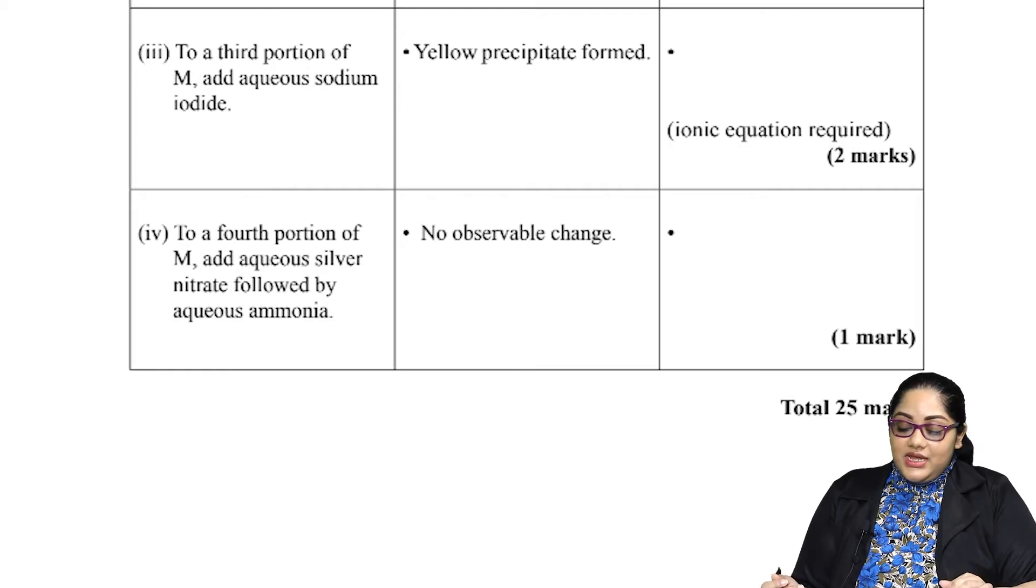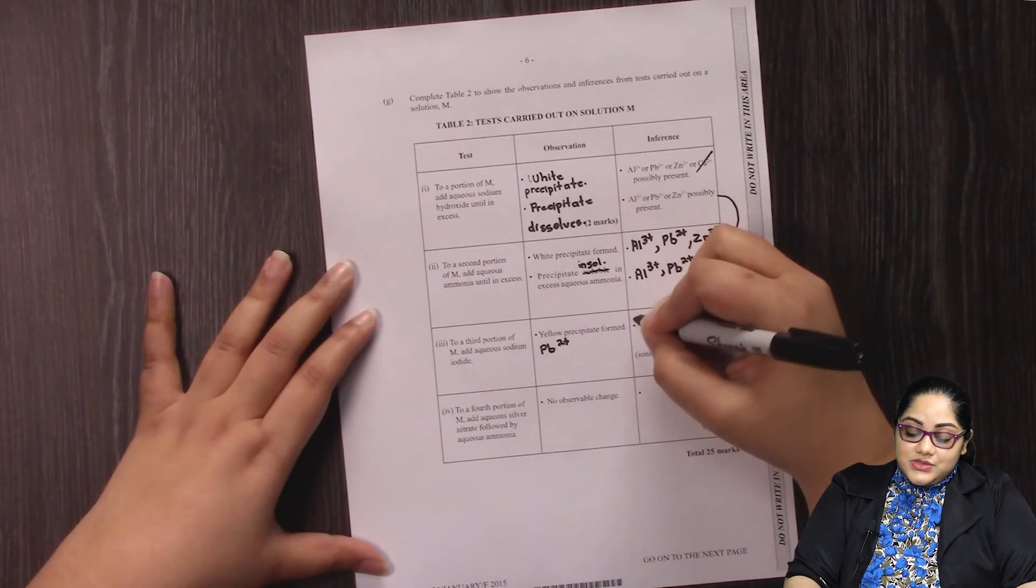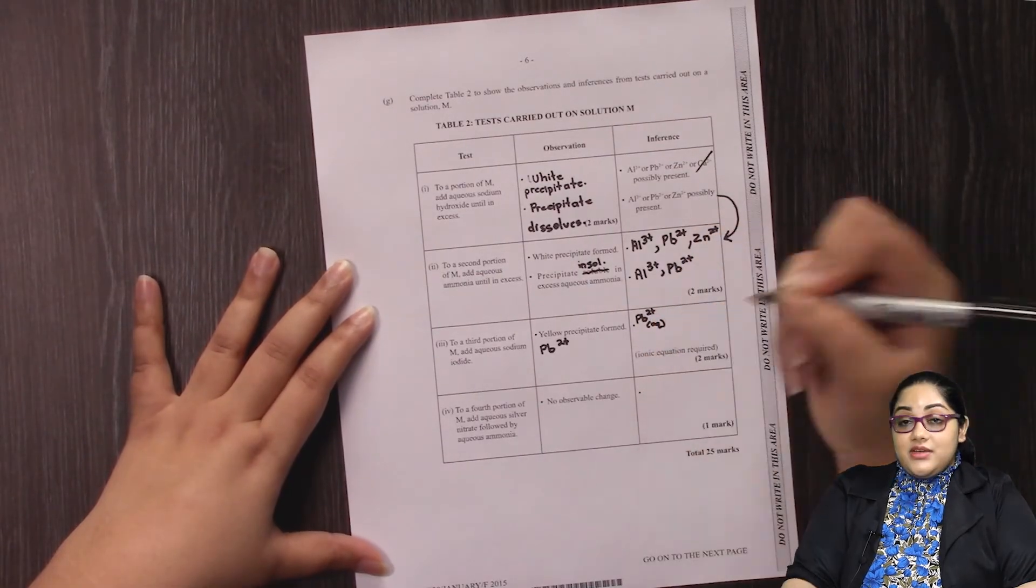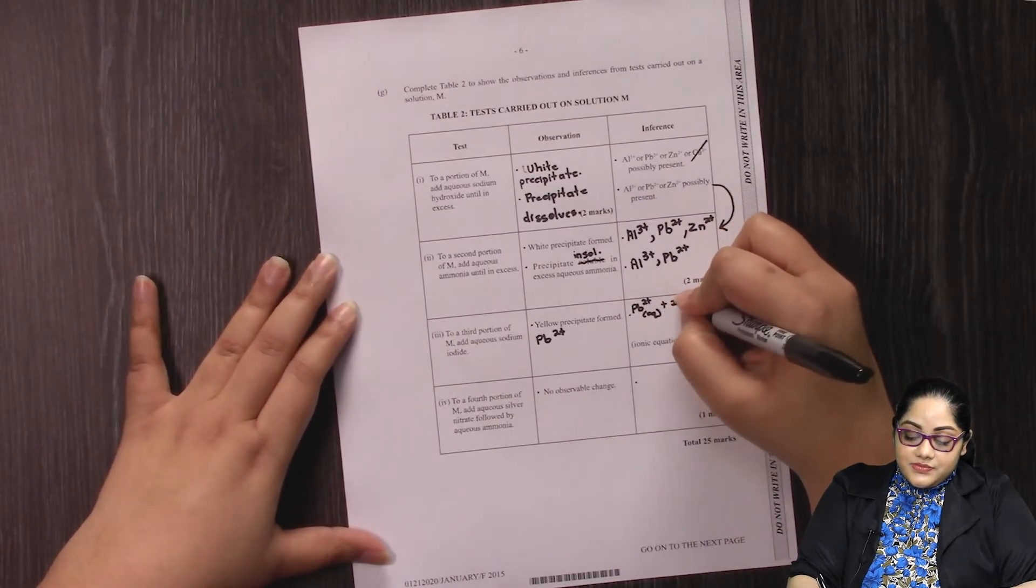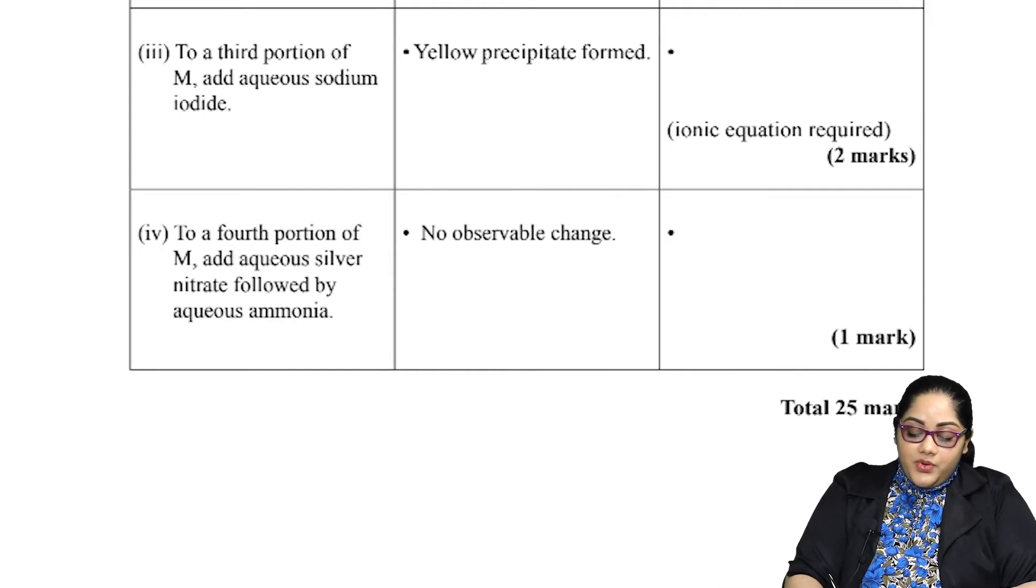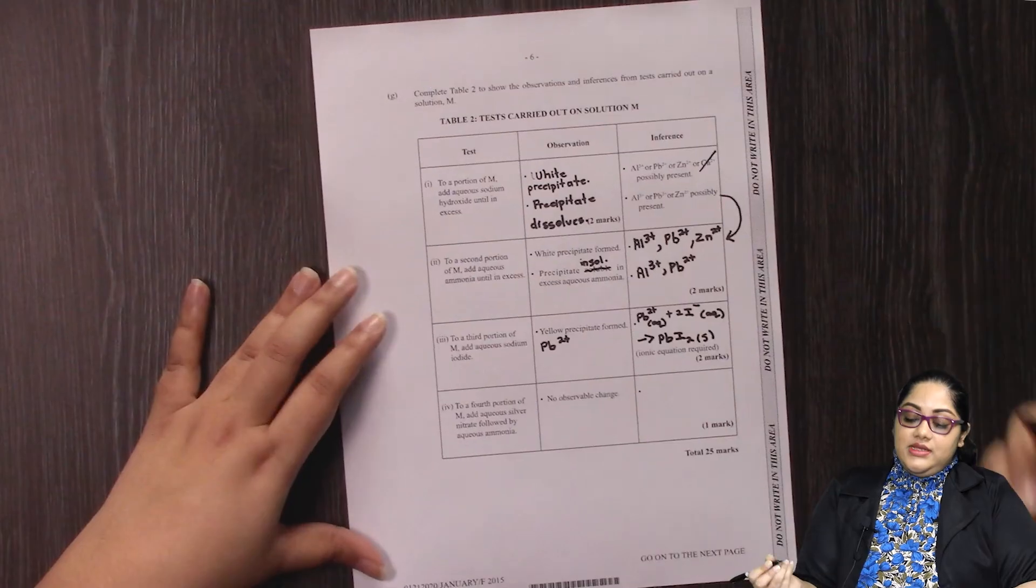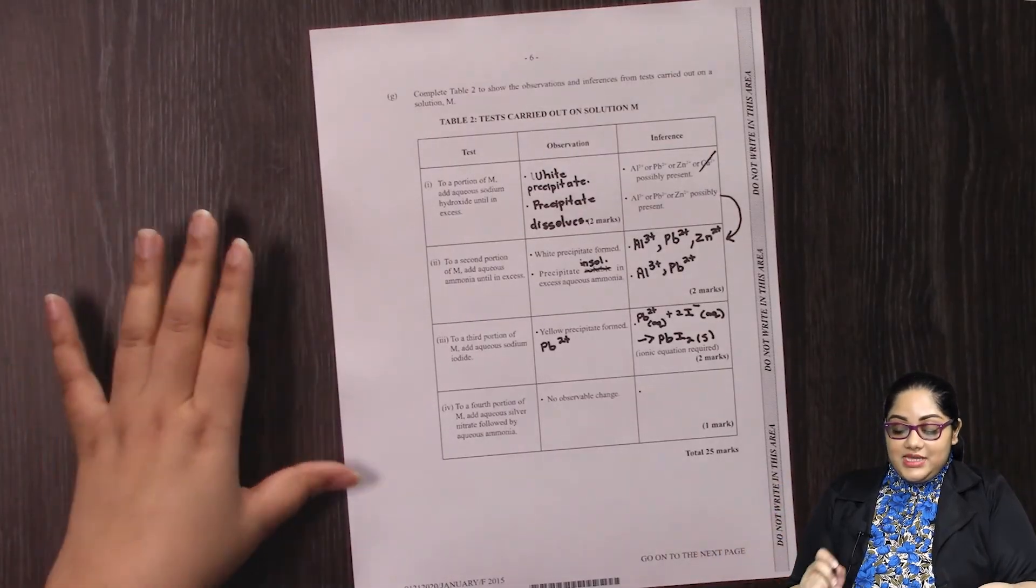We need to write an ionic equation for this reaction. It's going to be lead, Pb2+, and our ions are aqueous. You're going to include the state symbol, plus, and our product is actually going to be potassium iodide. And potassium iodide is yellow, so that is why we observe that precipitate.